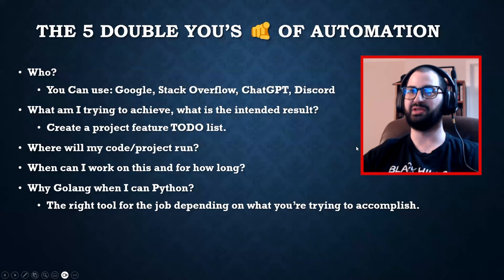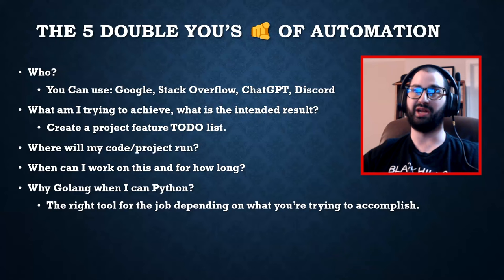Where is your code going to run? One awesome thing about Go is it's cross-platform compatible — you can write one program and compile it to macOS, Windows, Linux, and many different architectures. Go modules also help avoid dependency nightmares. When considering 'when can I work on this,' ask: is it worth the time? If it's a five-minute task, it's probably not worth 24 hours of automation, but automating a one-hour task over eight hours can be very beneficial long-term.